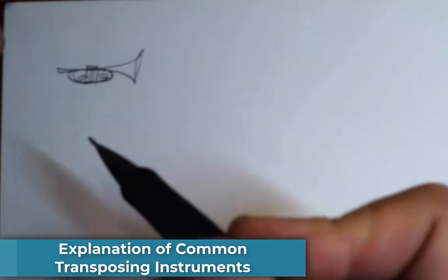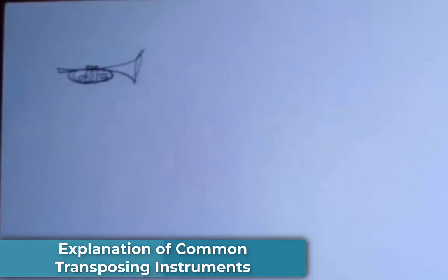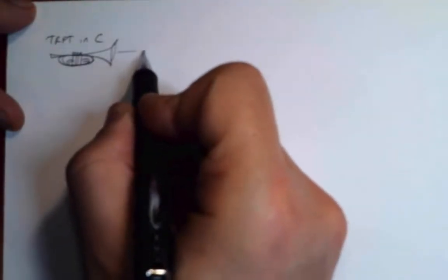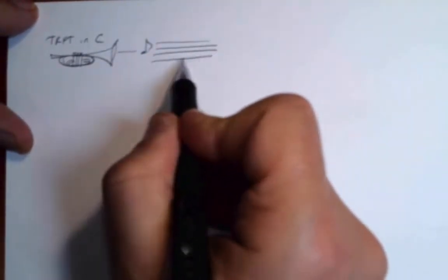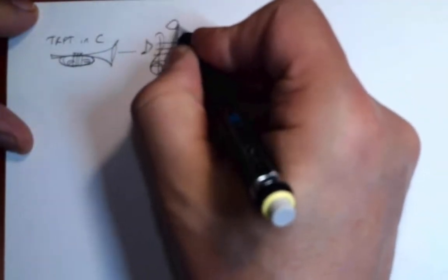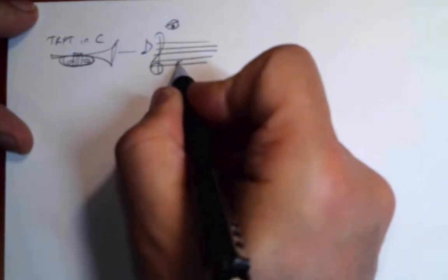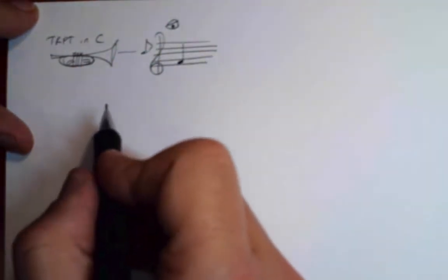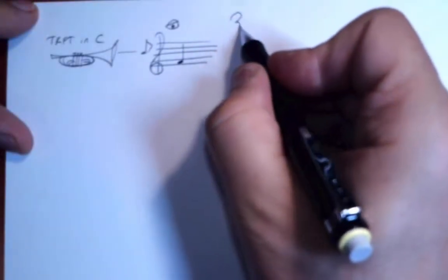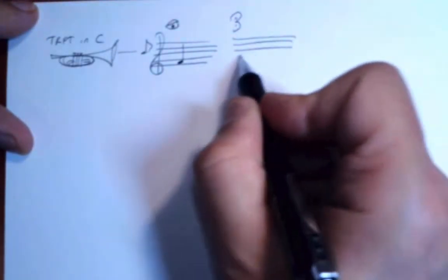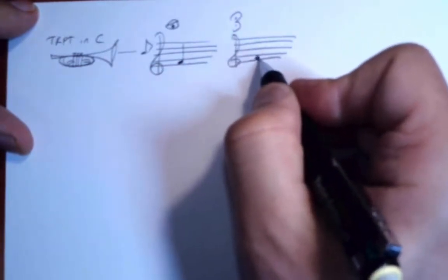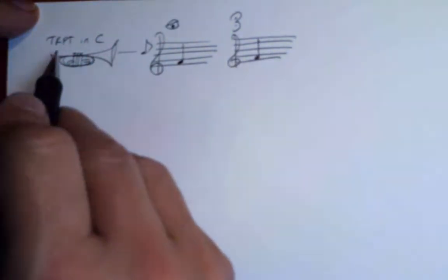Let's use these illustrations to tell the story of transposing instruments. Here we have a trumpet in C. The notes that come out of the C trumpet are actual pitch. So for instance, if this trumpet sees an F on the staff, what actually sounds is the same note — the note F. That's for trumpet in C.